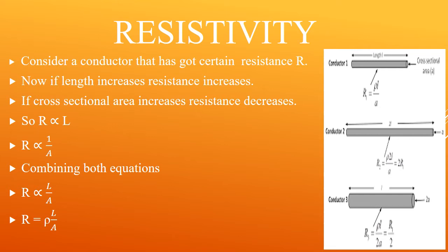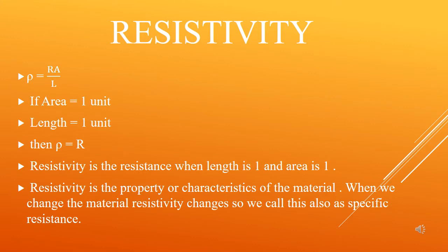Combining both these equations: R is directly proportional to L upon A. With length, resistance increases; with area, resistance decreases. This is a thumb rule. If we make these proportionalities equal, we must introduce a constant. So the equation becomes R equals rho L upon A. Now, what is rho? This is a constant, so let's study its characteristics. Rho equals R times A upon L.